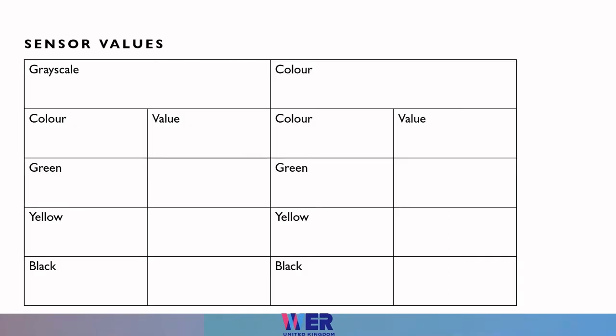Using the different sensors for Krypton — grayscale, color, and ultrasonic — find the values to fill in the table. You may have filled this in during the sensor experiment. Do you still have your values?